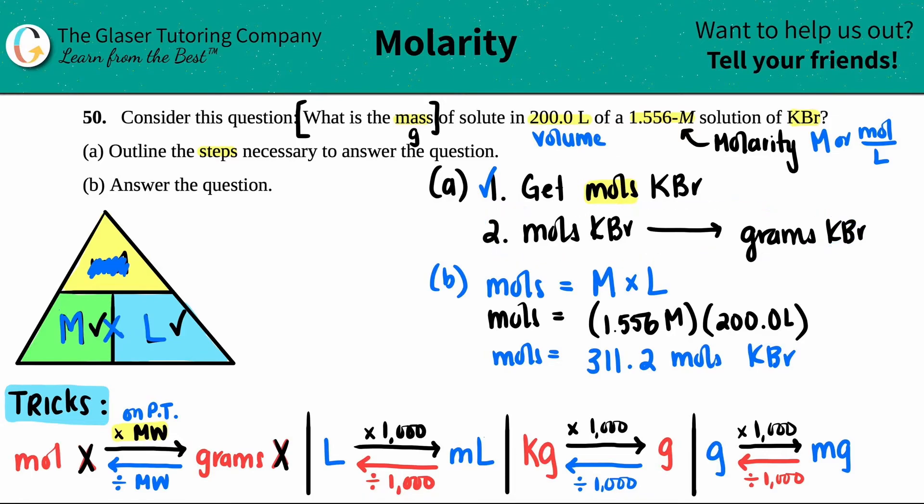Now we just got to convert moles to grams. So moles to grams, I'm just going to multiply by my molecular weight. So 311.2 moles of KBr times the molecular weight, but they didn't give it to us. So we have to go find it. Remember, this is just on the periodic table.